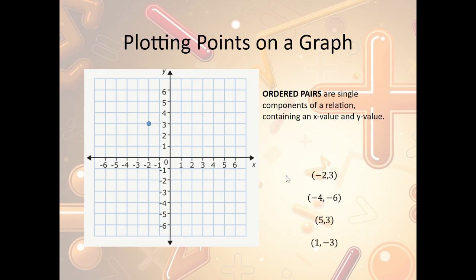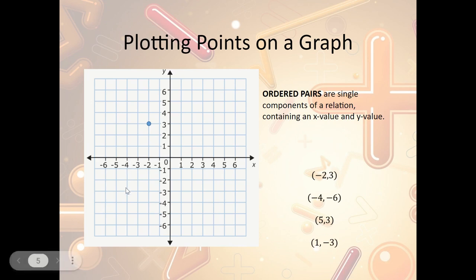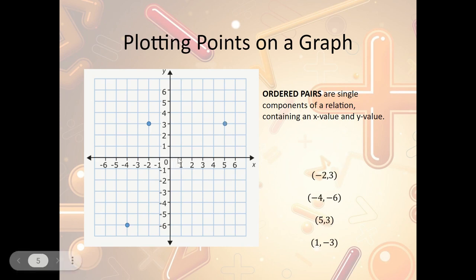Next, negative 4, negative 6: I find negative 4 on the x-axis, then go down to negative 6 and plot that point. Then 5, 3: x is 5, so I find 5 on the x-axis, and y is 3, so I find 3 on the y-axis and plot the point. Lastly, 1, negative 3: x is 1, so I find 1 on the x-axis, and negative 3 on the y-axis, and I plot that point. Now I have plotted all four of these ordered pairs.